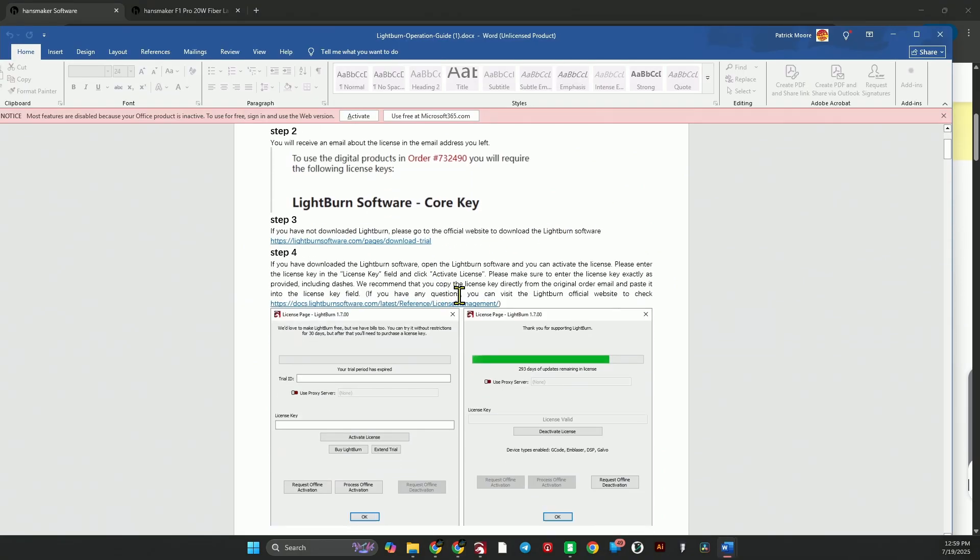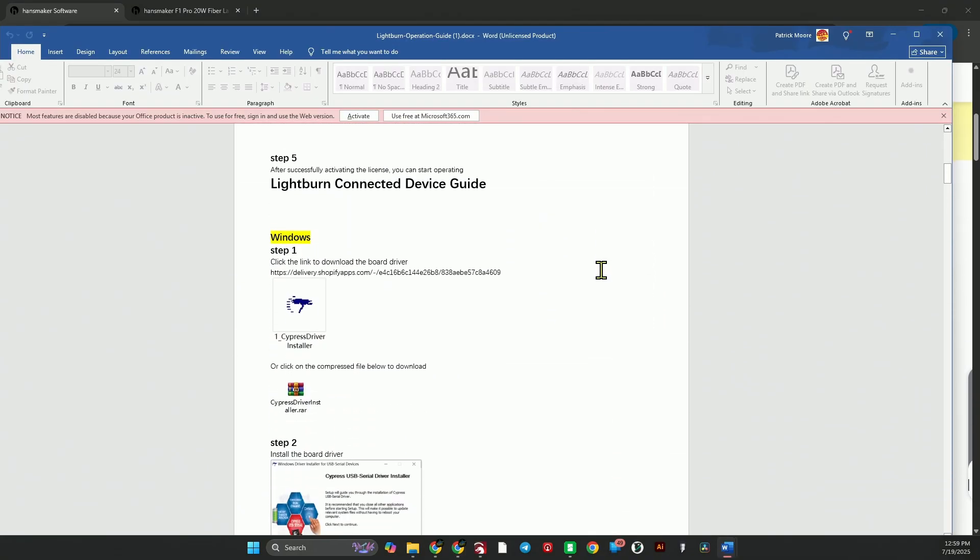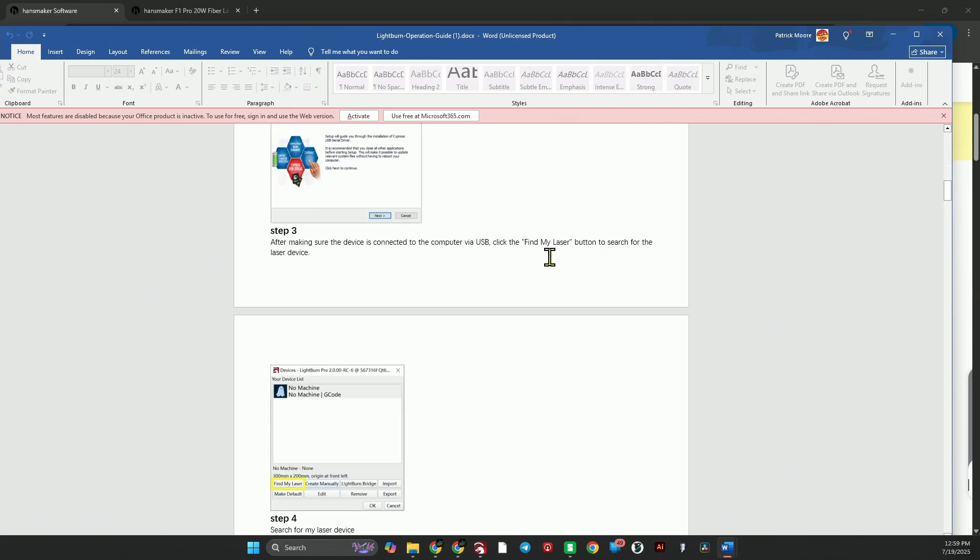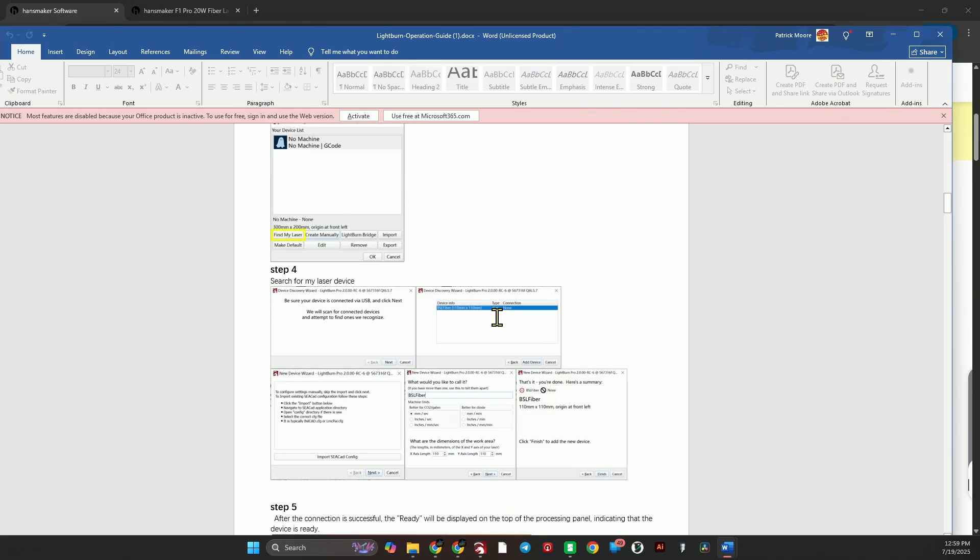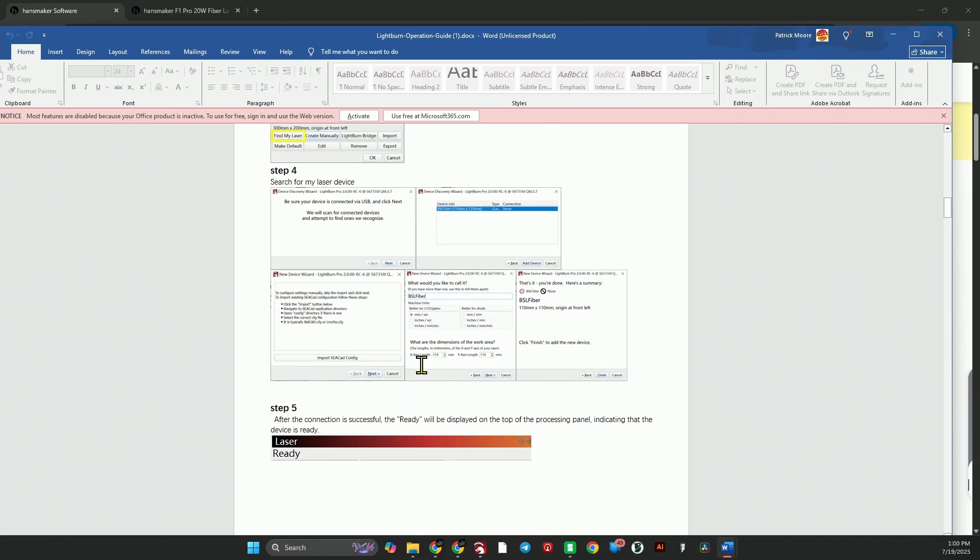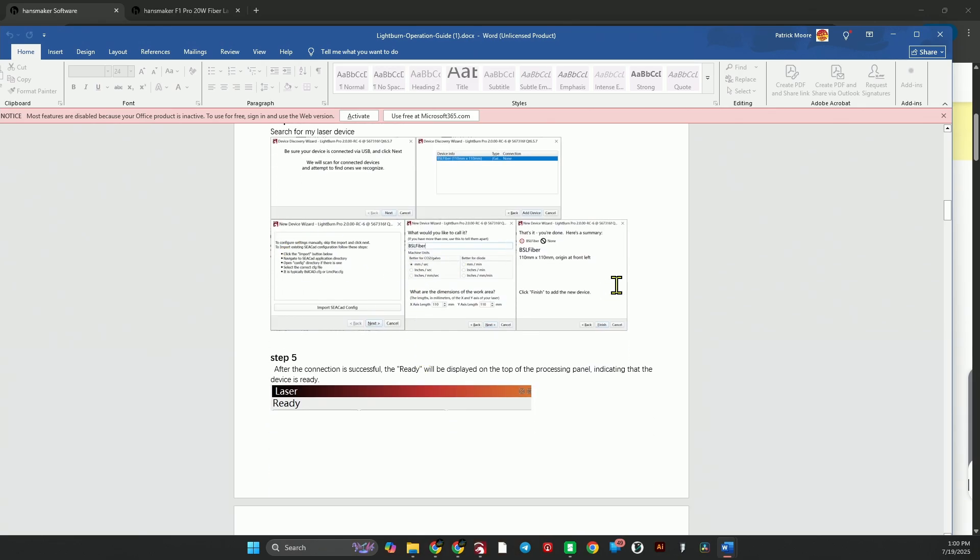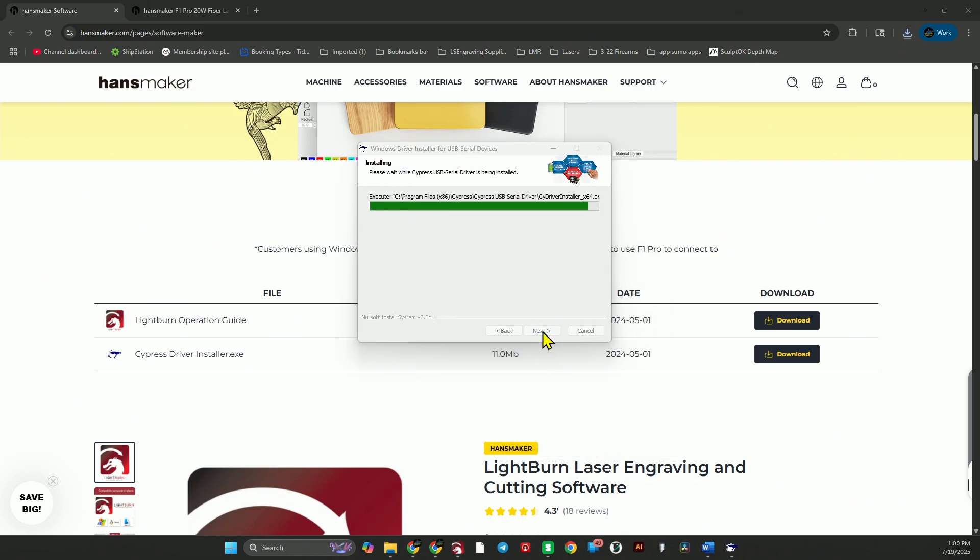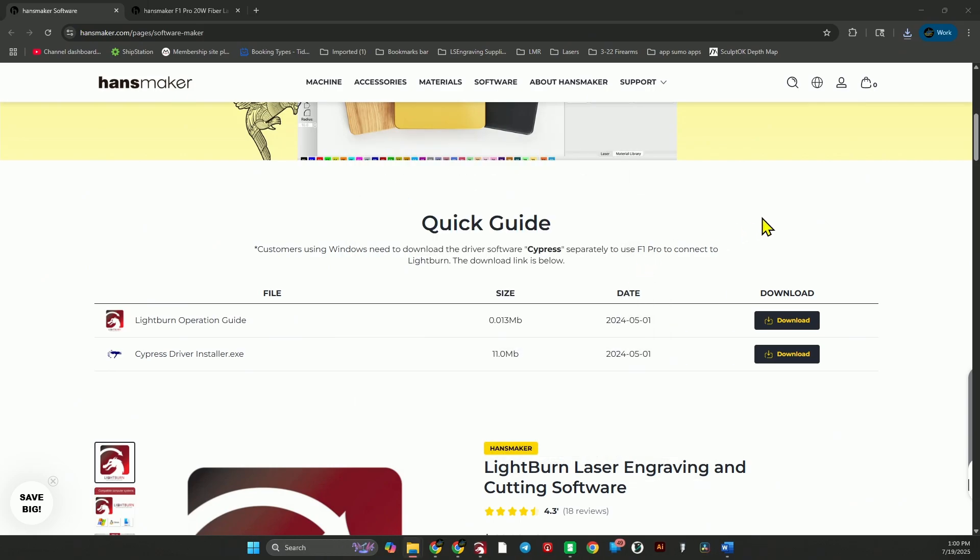It's telling us to download light burn. We've already done that. Connected device guide. So, we download the driver. Install the driver. Do find my laser. And then we wait for it. And then we'll set it up according to this guide. Let's download the driver. Extract it. All right. It's extracted and installed. So, now let's plug the laser back in.